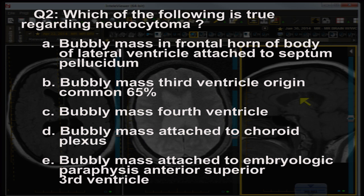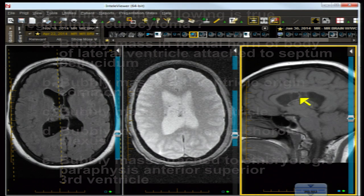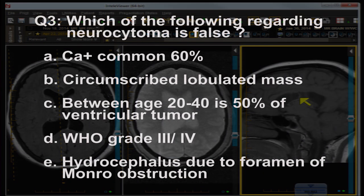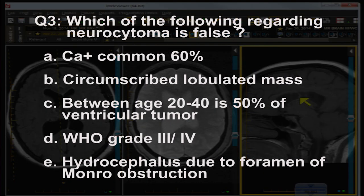A bubbly mass arising from or attached to the choroid plexus is true for choroid plexus papilloma and carcinoma, but not for neurocytoma. A bubbly mass attached to the embryologic paraphysis in the anterosuperior third ventricle — those are the features of colloid cyst, not of this lesion.